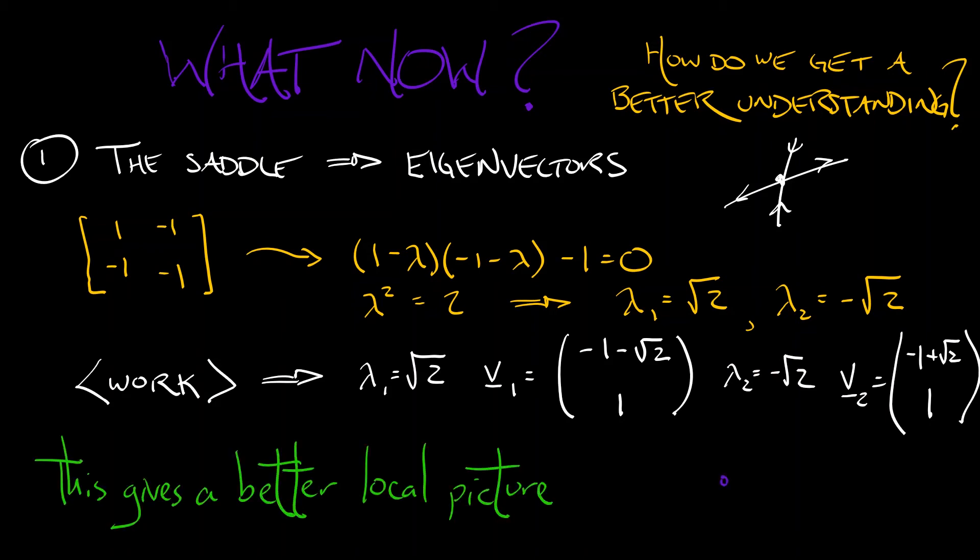Now, again, this is in local coordinates about that equilibrium. This is not in the full x, y space. This is local about (1, 1). Those eigenvectors give us a better local picture.